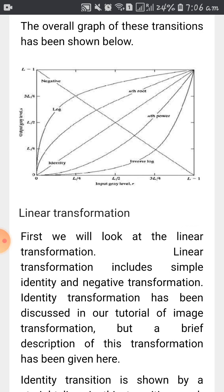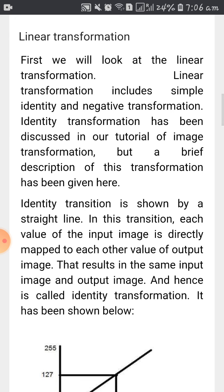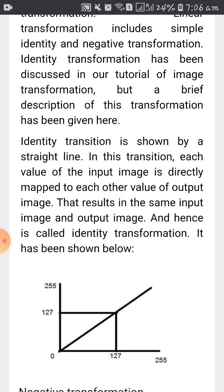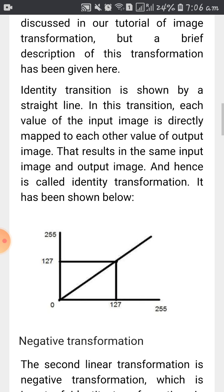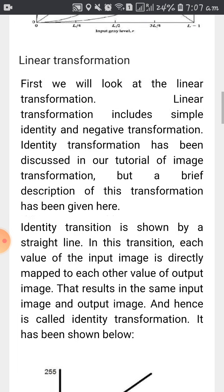First we will see linear transformation. Linear transformation includes simple and negative transformation — anything which has a linear relationship is called a linear transformation. On the x-axis you have values from 0 to 255 and on the y-axis your value is also 0 to 255. With some change in input you get some change in output. This is also called identity transformation, where you are changing the identity of the image.